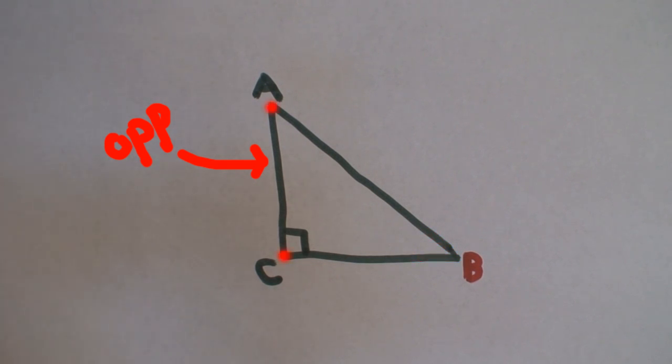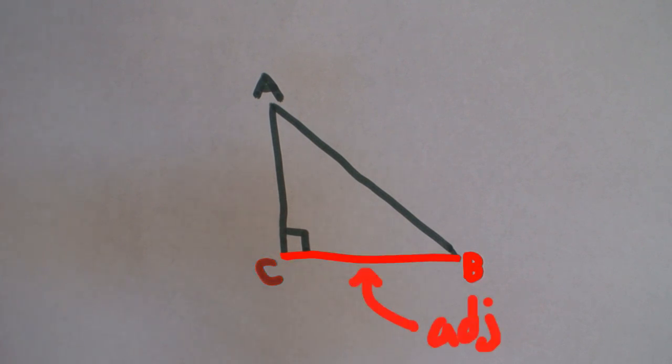As you can see, the endpoints of AC are on angle A and angle C. The adjacent side is the side next to the angle you are using and connects it to the right angle. So the adjacent side would be line CB. The endpoints of line CB are on angle C and angle B, therefore connecting the angle you are using with the right angle.